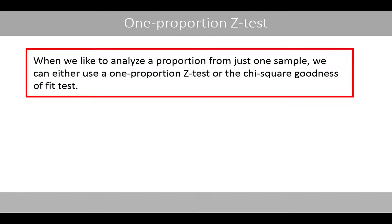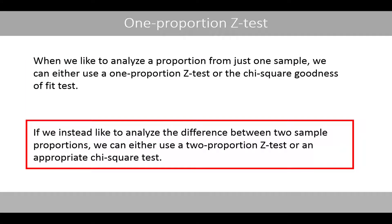When we like to analyze a proportion from just one sample, we can either use a one-proportion Z-test or the chi-square goodness-of-fit test. If we instead like to analyze the difference between two sample proportions, we can either use a two-sample proportion Z-test or an appropriate chi-square test.